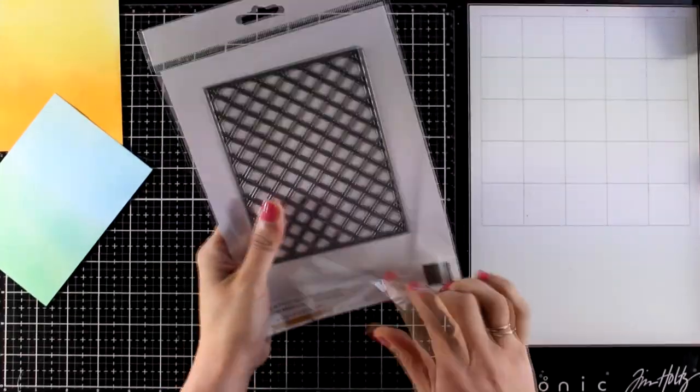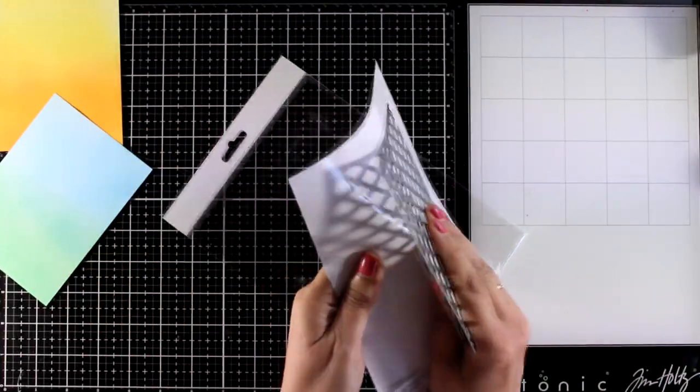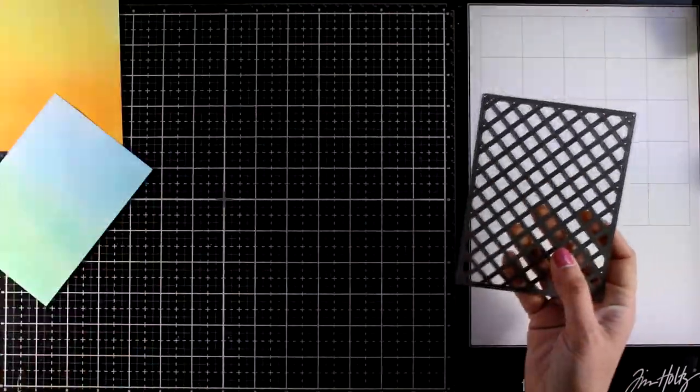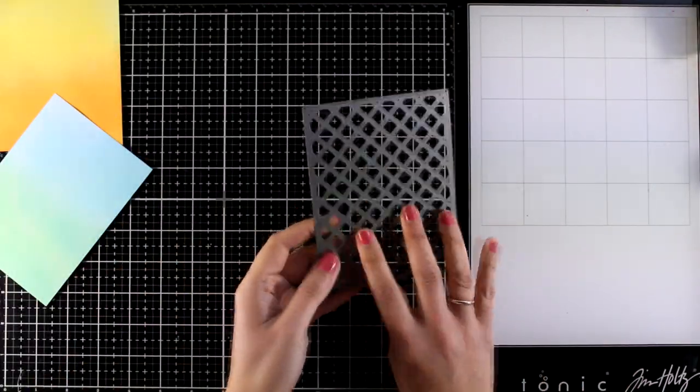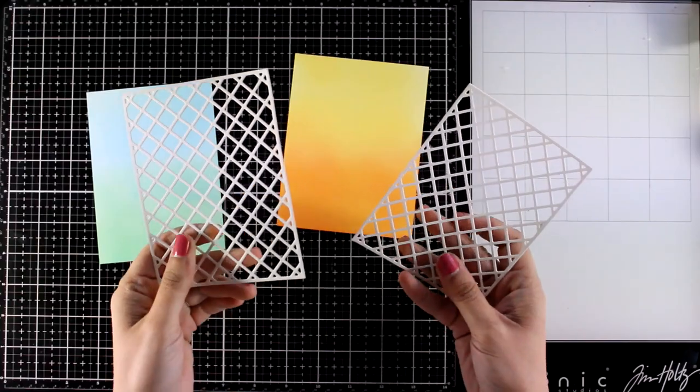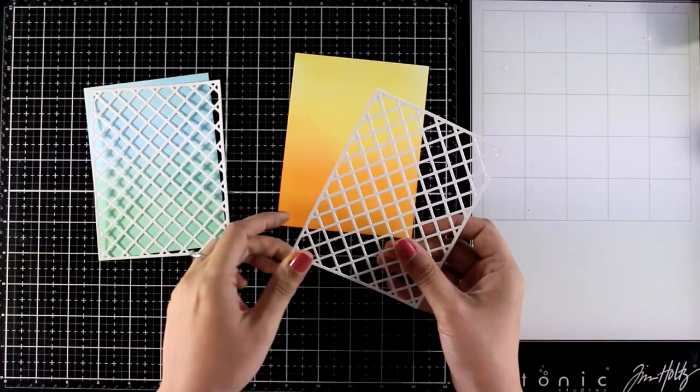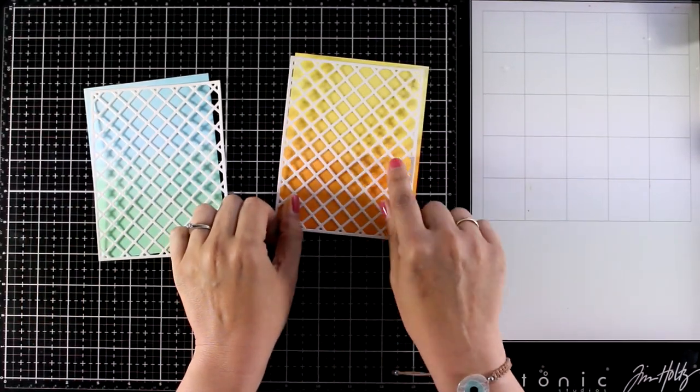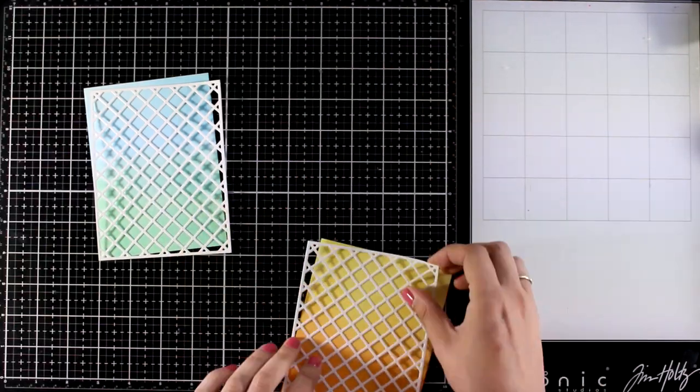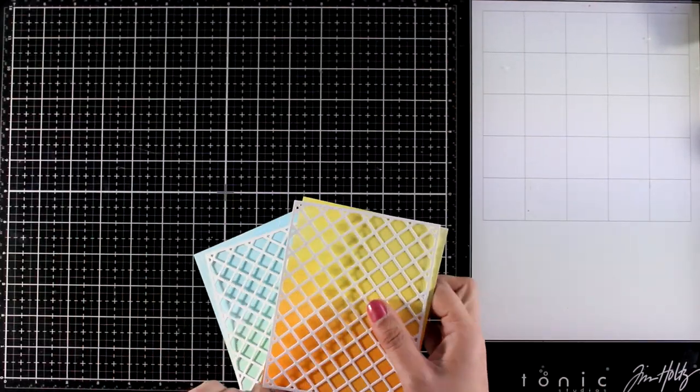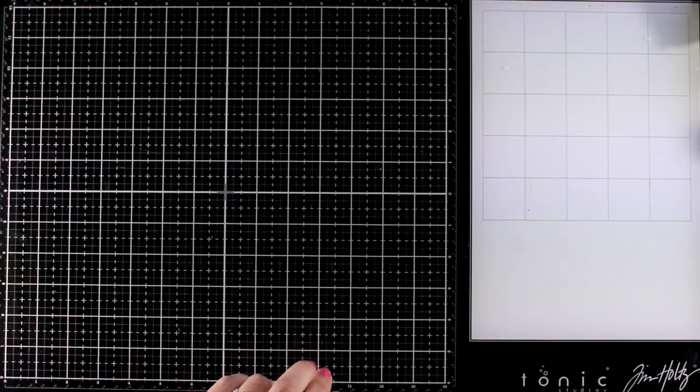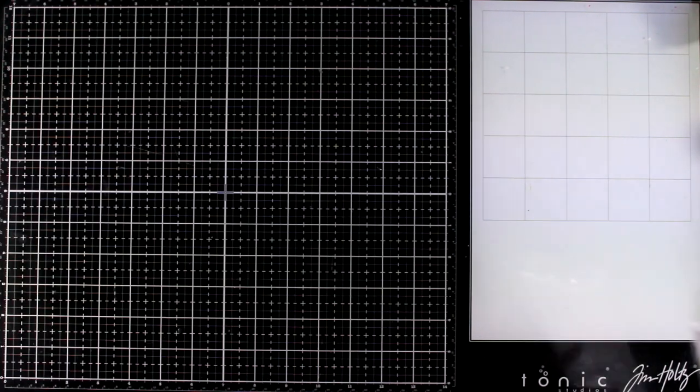Now here's a new die from the latest release, this is called Garden Trellis Cover Die. I'm going to cut it out from white cardstock and this is going to cover up my background. And since I have two backgrounds, I did cut out two of those trellis cover dies just so that I can use it for a future card. Now I'm going to put those aside and I will work on the focal point.